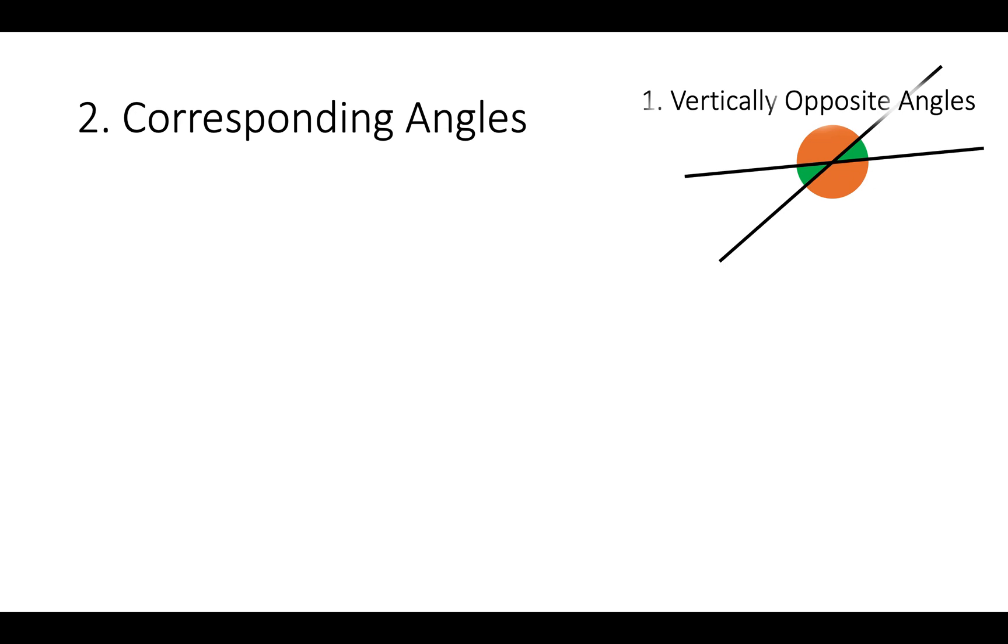The next rule is about corresponding angles. So we have two parallel lines like this. The arrows here show that they're parallel. The matching arrows show that they're parallel. And we get a line crossing through them. The corresponding angles will look like this.